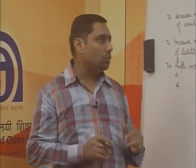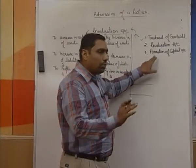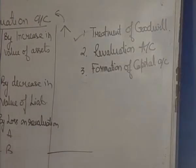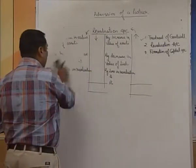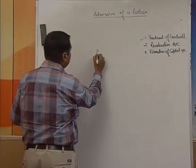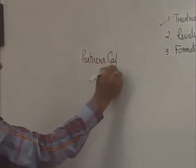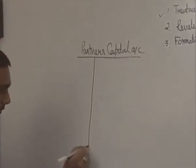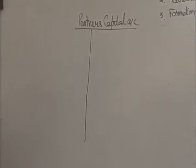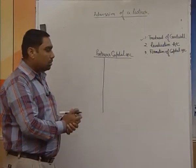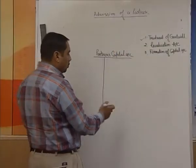Once you are able to have the revaluation account, the third thing is the formation of capital accounts — how the capital accounts are going to be prepared in case of the admission of the partner. This is a very typical and important thing. In case of the partner's capital account, first of all make sure whether it is a fixed capital account or current fluctuating. If it is fixed, prepare two different accounts: fixed capital and current account. If it is fluctuating, there is no problem, we can have one single account.